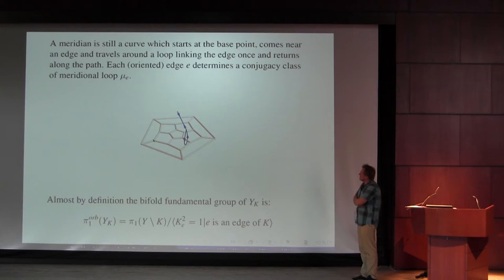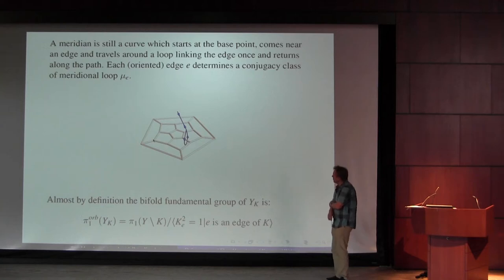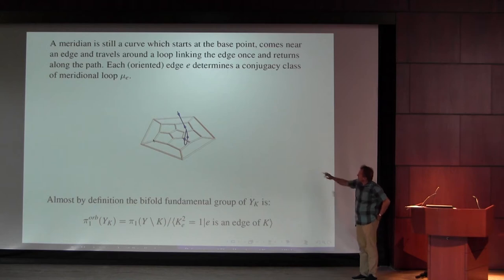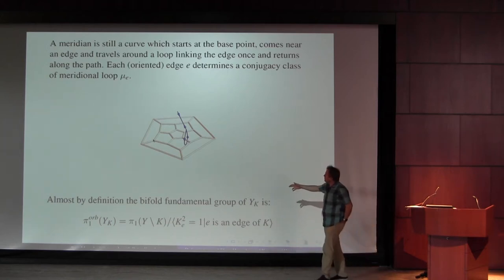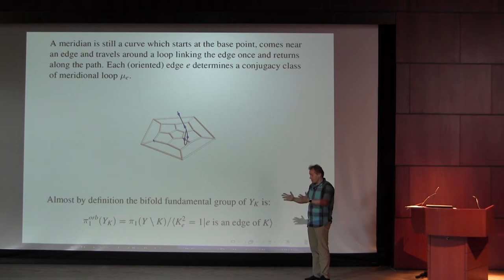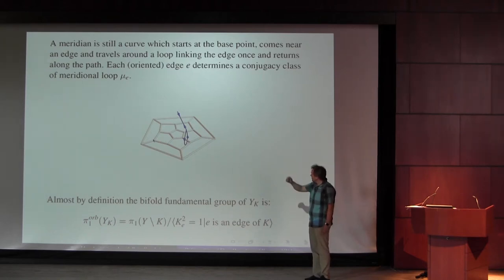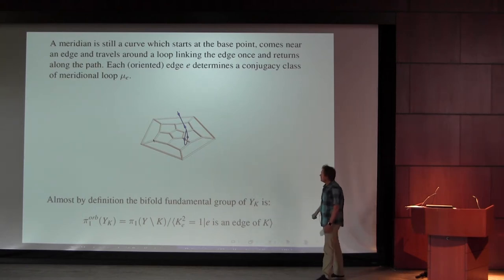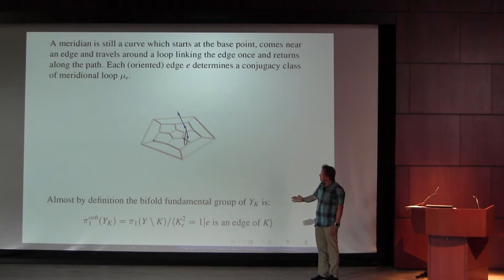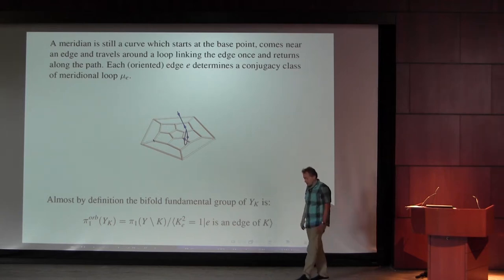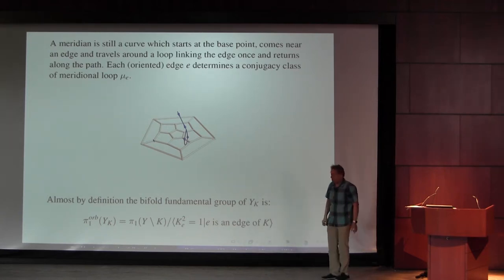Let me remind you of the connection with the four-color theorem. If I have a graph sitting in the three-sphere, there's a natural notion of a meridional loop — a loop that comes near an edge, goes once around it, and goes back to the base point. If the graph is planar, then the fundamental group of the complement is generated by a canonical set of meridians. The orbifold fundamental group is just the fundamental group of the complement with the squares of the meridional elements being one.